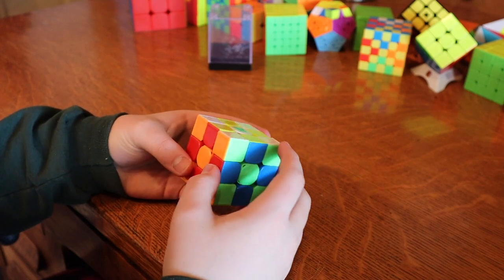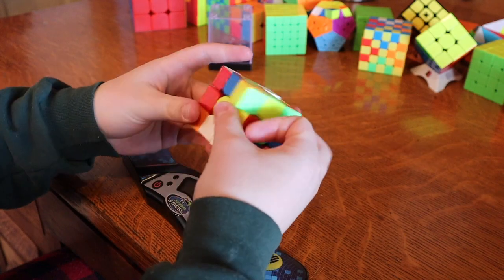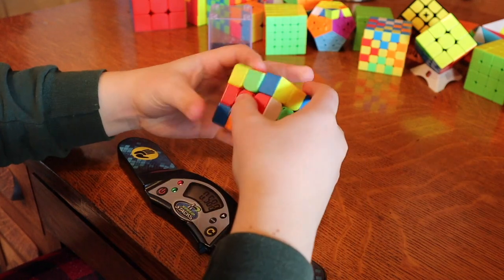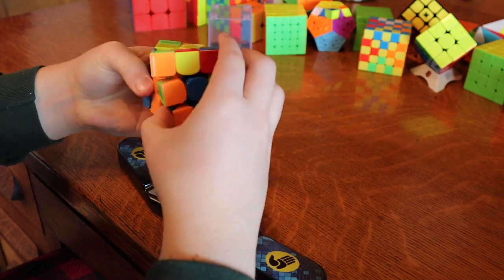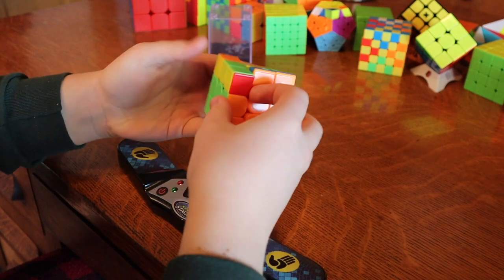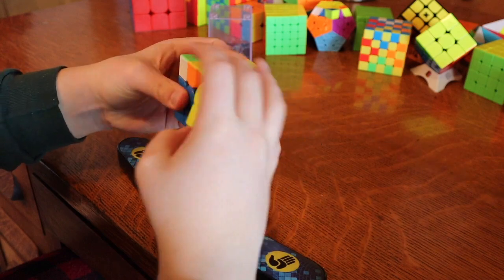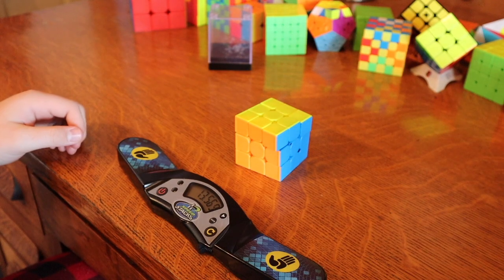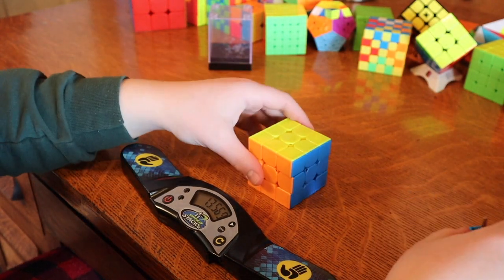Alright, so I'm gonna do a solve with this cube to see how good it is during a solve. Alright, time for a hand scramble. Okay, I've got my scramble. Alright, that was a 13.56. I think it might be a little bit too loose, so I'm gonna tighten it.